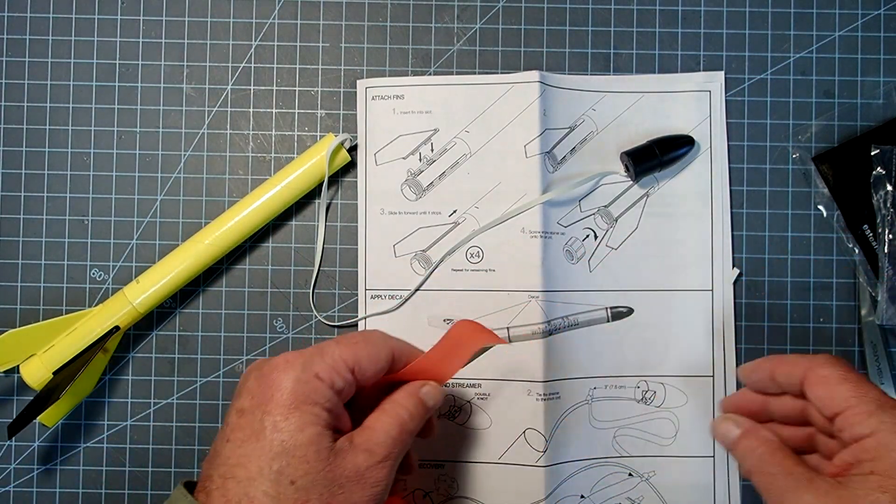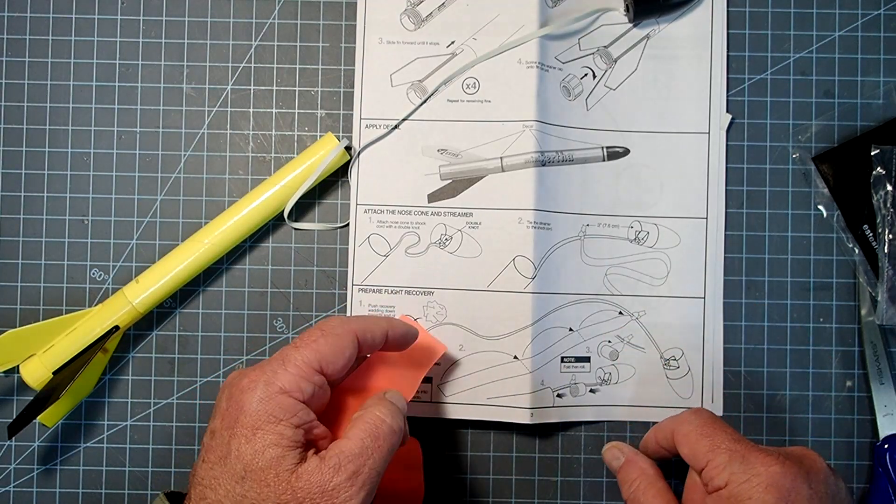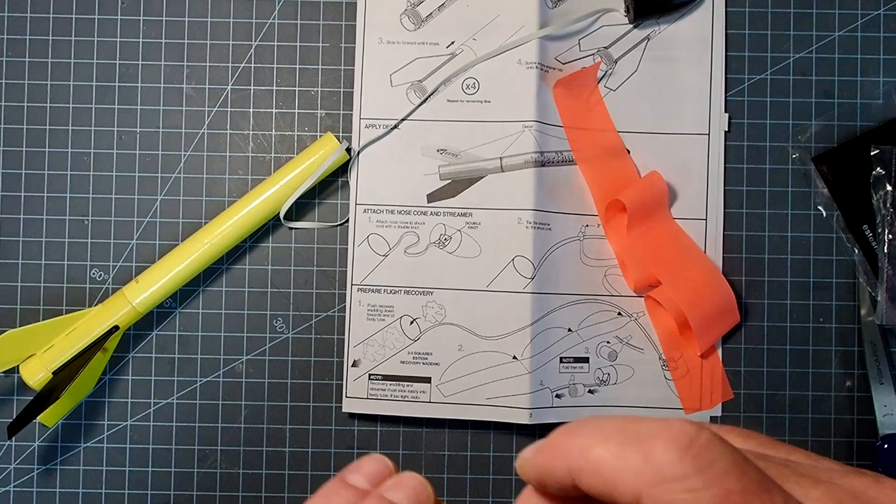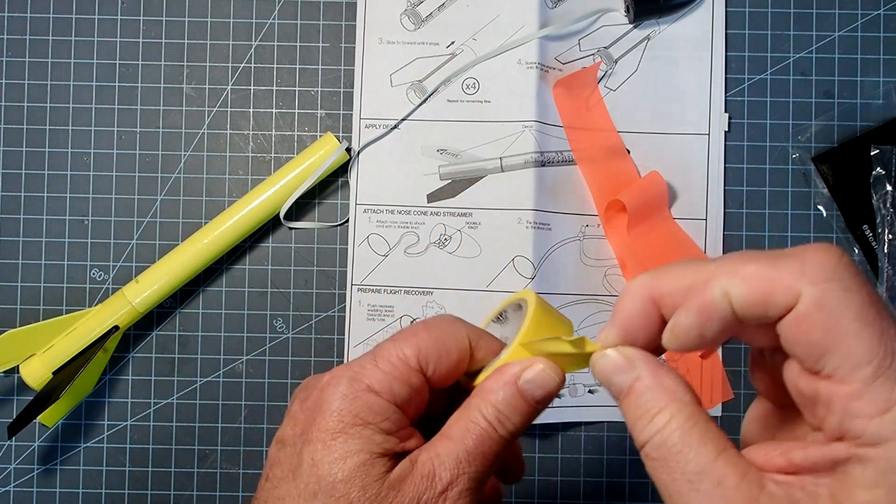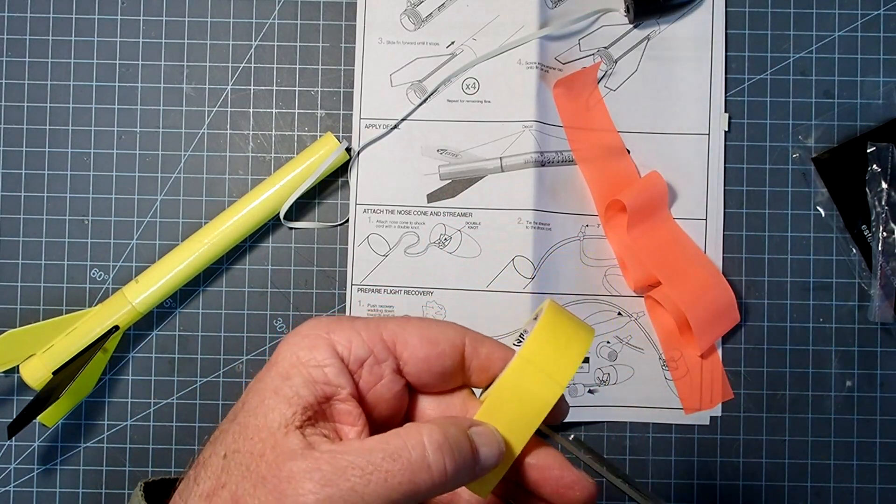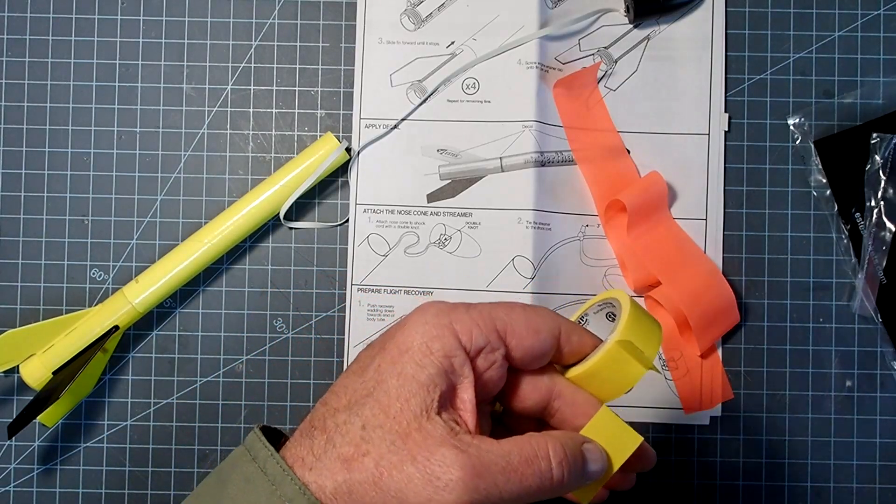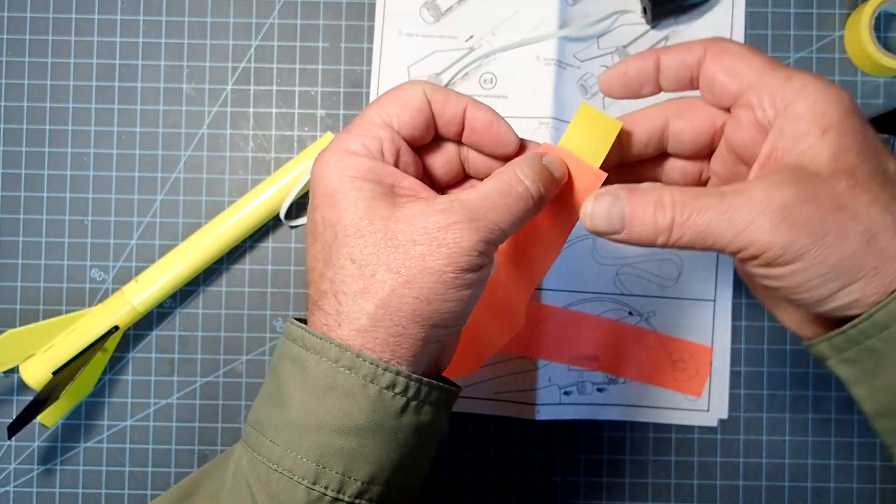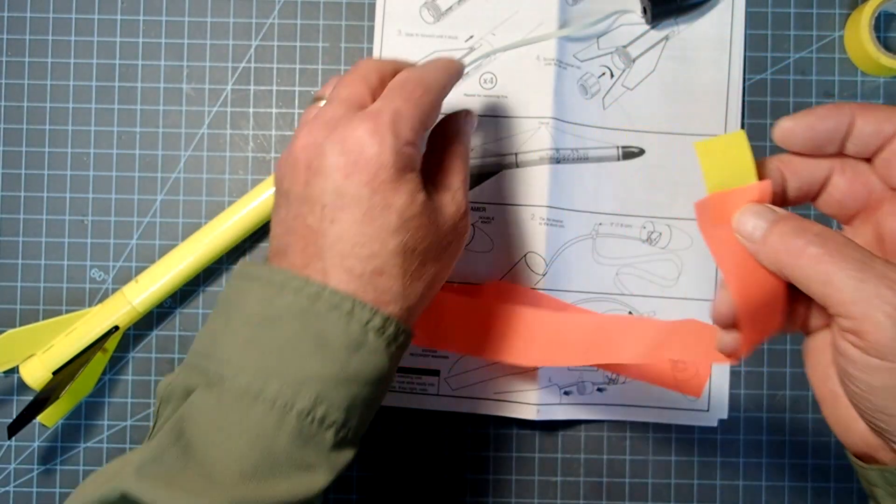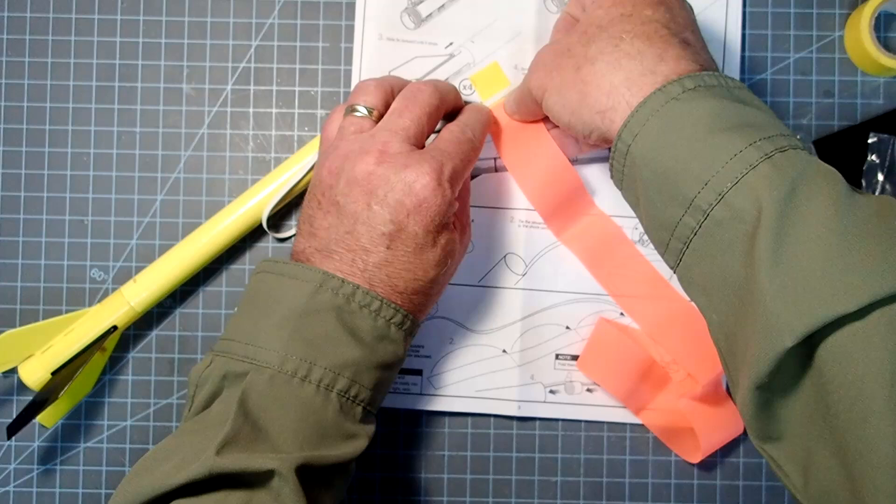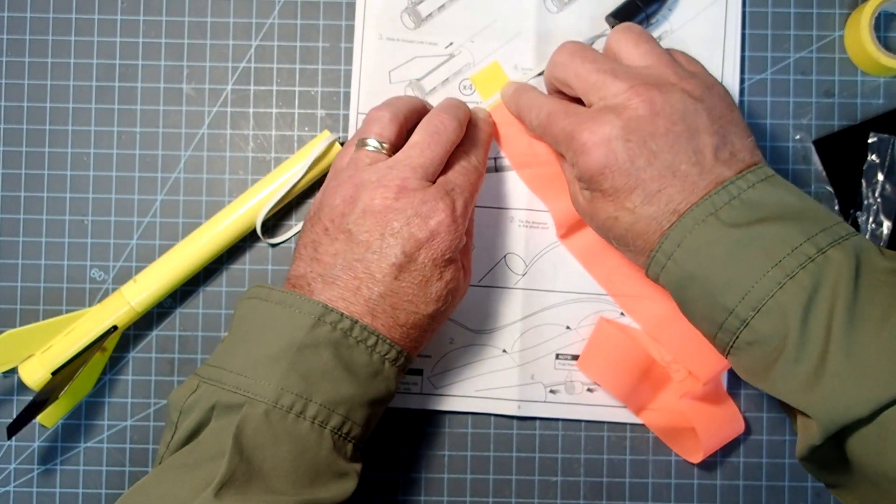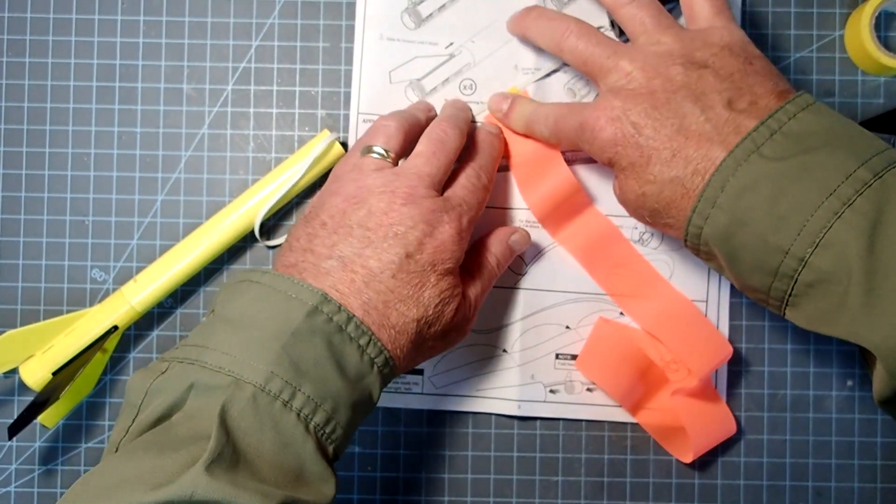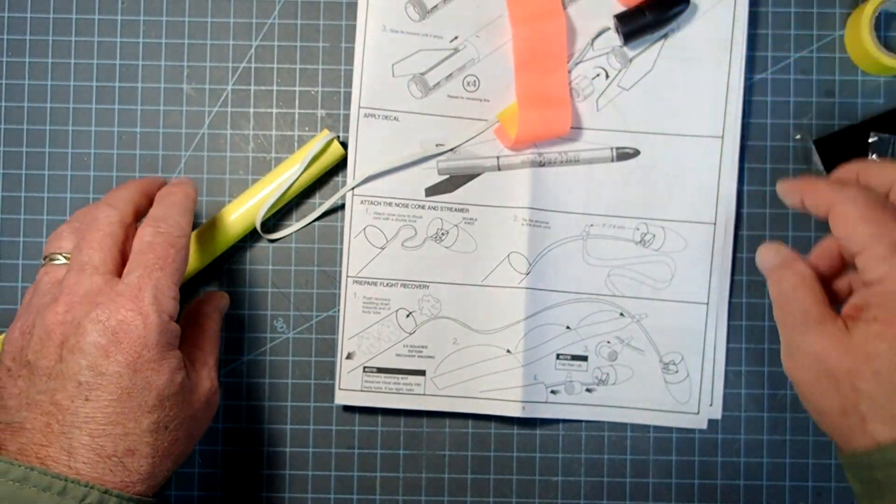Now, for the streamer, you can either tie it on, which is what they're showing here, or you can tape it on. Either one's fine. I like to use a little bit of electrical tape. Here, I'll just get a length of it. It doesn't matter what type you use, what color it is. And what I'll do here is I'm going to place about half the length on one side of the streamer, a little over half the length. I'm going to come down about a quarter of the length of the shock cord, and I'm going to run that across the sticky side of the tape there, and then I'm going to fold this whole thing over like that.